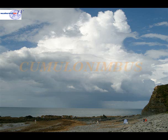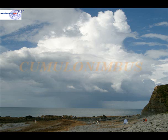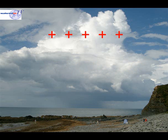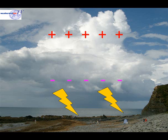Inside the cumulonimbus there's lots of turbulence. This turbulence is throwing around rain droplets and hailstones. As they bang together they generate a static charge, with the top of the cloud becoming positively charged and the bottom negatively charged. Eventually this charge is released back to Earth — we see that process as lightning.